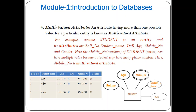The next type is multi-valued attribute. An attribute that can have more than one possible value for a particular entity is known as a multi-valued attribute. For example, the mobile number attribute of a student entity can have multiple values because a student may have multiple phone numbers. Similarly, email ID is a multi-valued attribute since one person can have more than one email ID. Multi-valued attributes are represented using a double ellipse symbol.